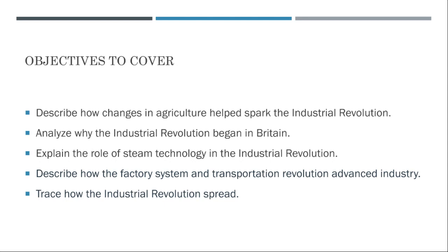Finally, tracing how the Industrial Revolution spread, the success of it in Britain sparked widespread interest and emulation across Europe and the United States. The advancements in technology, the factory system, and transportation served as models for other countries aiming to replicate Britain's industrial success. These technological and industrial advancements gradually spread across the globe, transforming societies and economies, leading to a global industrial transformation that reshaped the world and laid the foundation for modern, industrialized and developed societies.